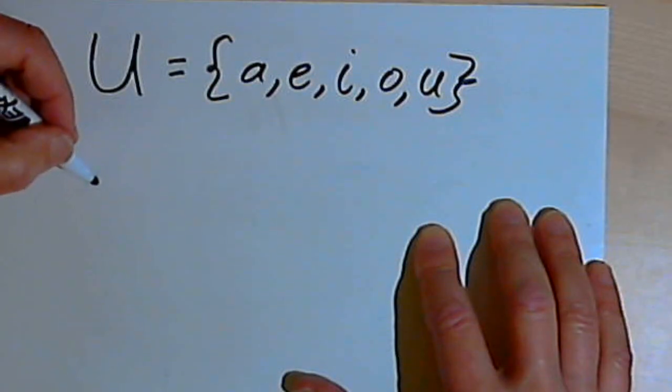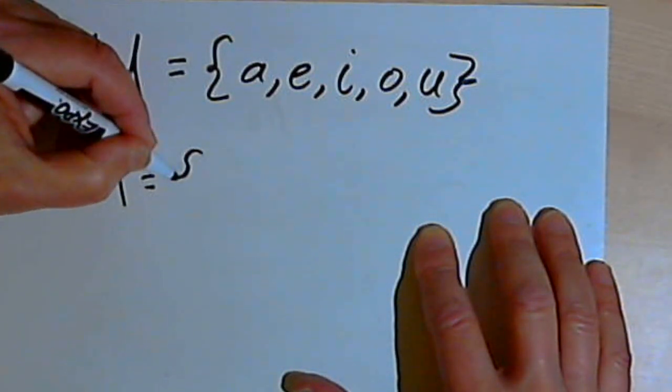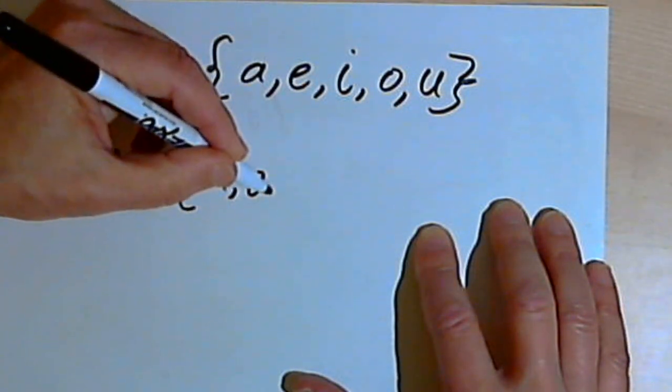Now let's say I want a subset of this. Let's say I want a subset A, and subset A is going to consist only of the letters A and E.